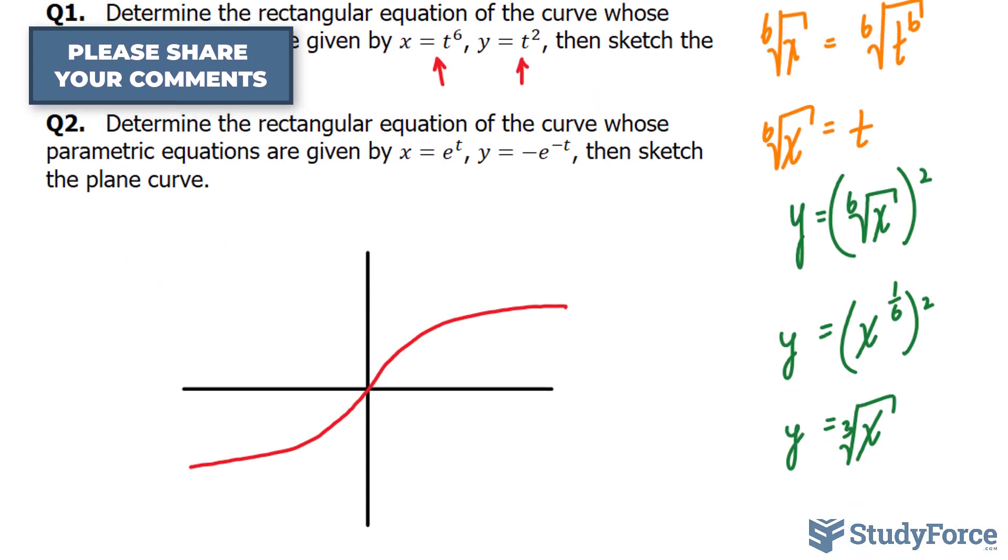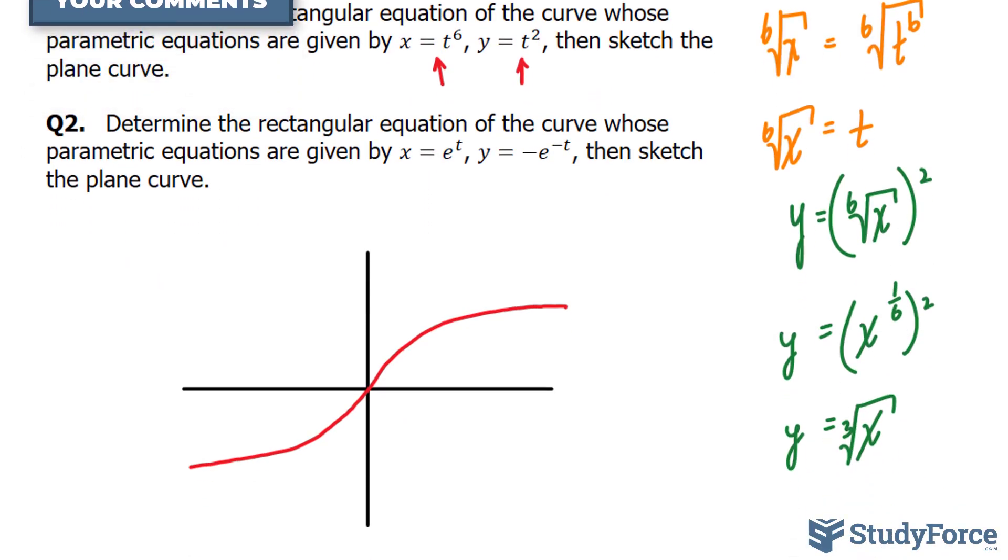Which means that we shouldn't have any y values that are negative. So this part of the graph shouldn't be included because this means that we have y values that are negative. Therefore only what is being highlighted also suits the domain and range of the two original parametric equations.